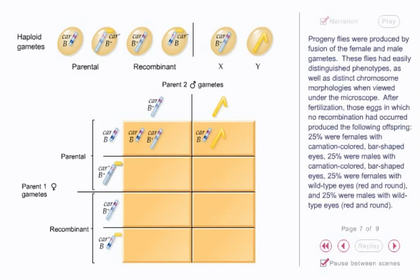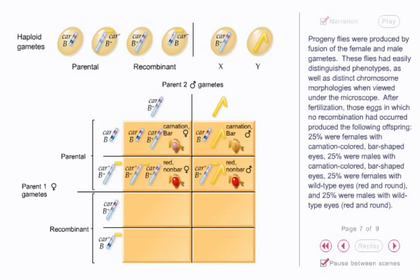After fertilization, those eggs in which no recombination had occurred produced the following offspring: 25% were females with carnation-colored, bar-shaped eyes; 25% were males with carnation-colored, bar-shaped eyes; and 25% were females with wild-type eyes, red and round.